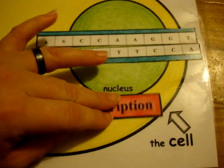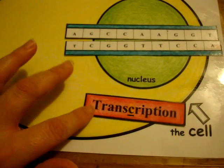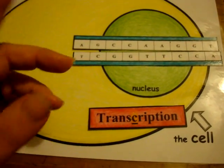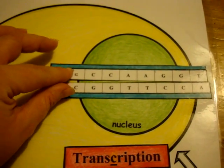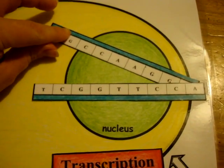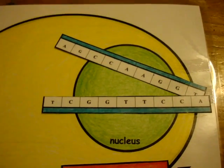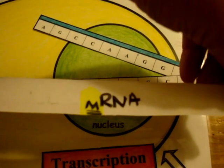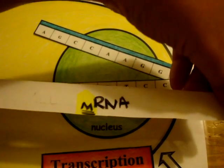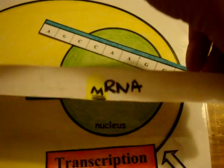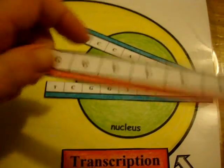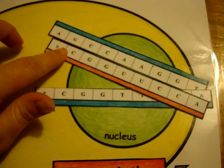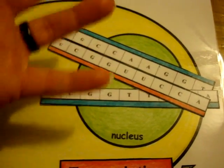This first process in making proteins is called transcription. What happens during this process is that your DNA is going to unwind, and as it unwinds it's going to create RNA. This RNA is actually called messenger RNA. We're creating this message, and we're going to use the message it got from DNA to create proteins. This is created using DNA as a template.